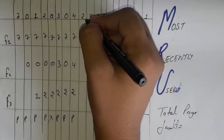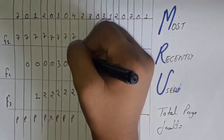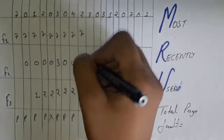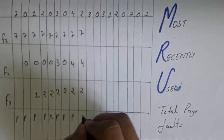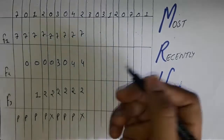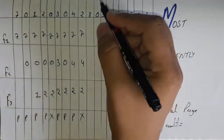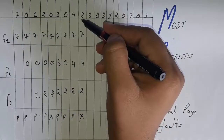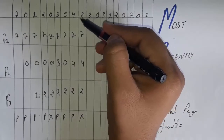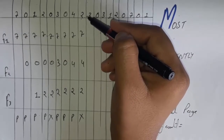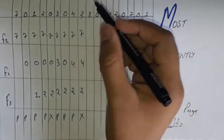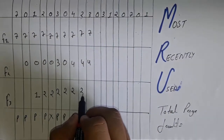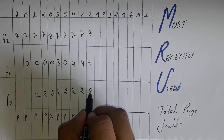The next page is 2. Since 2 is already in our list, directly write 7, 4, 2 — there is no page replacement. The next process is 3. We just used 2, so 2 is our MRU — Most Recently Used page — and we have to remove it. On the place of 2 write 3.